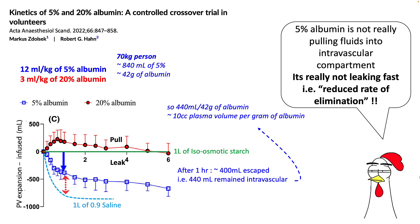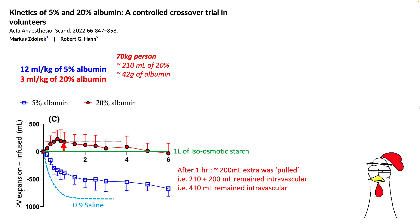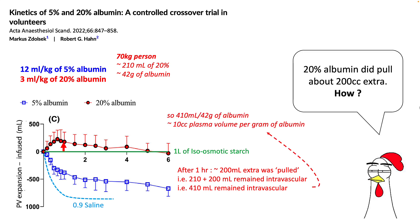When you look at 20% albumin, a 70 kg person would have received approximately 210 ml — that is 42 grams of albumin. After one hour, you can see that an extra 200 cc was pulled inside the vessels. You gave 210 ml and 200 cc was pulled, so that means 410 ml remained intravascular after one hour. That is approximately 10 cc of plasma volume per gram of albumin — and as we have seen in our previous lecture, this number does not change even if we give different concentrations of albumin. So let's see how 20% albumin was able to pull that 200 cc into the intravascular space.